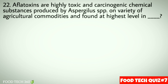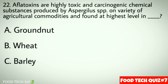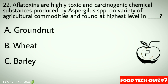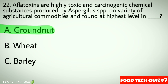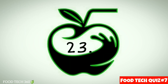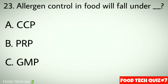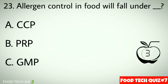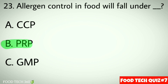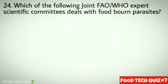Question number 22: Aflatoxins are highly toxic and carcinogenic chemical substances produced by Aspergillus species on a variety of agricultural commodities, and found at highest levels in — options: a) Groundnut, b) Wheat, c) Barley. Correct answer: a) Groundnut. Question number 23: Allergen control in food will fall under — options: a) CCP, b) PRP, c) GMP. Correct answer: b) PRP.